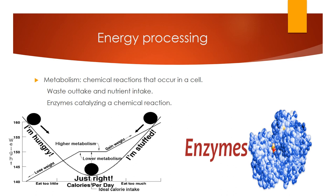Another property of life is energy processing. All organisms do what's known as metabolism — they metabolize chemicals. It's just chemical reactions that occur in a cell. A couple of examples are waste outtake and nutrient intake — or eating and excreting. Another example is enzymes that catalyze a chemical reaction.